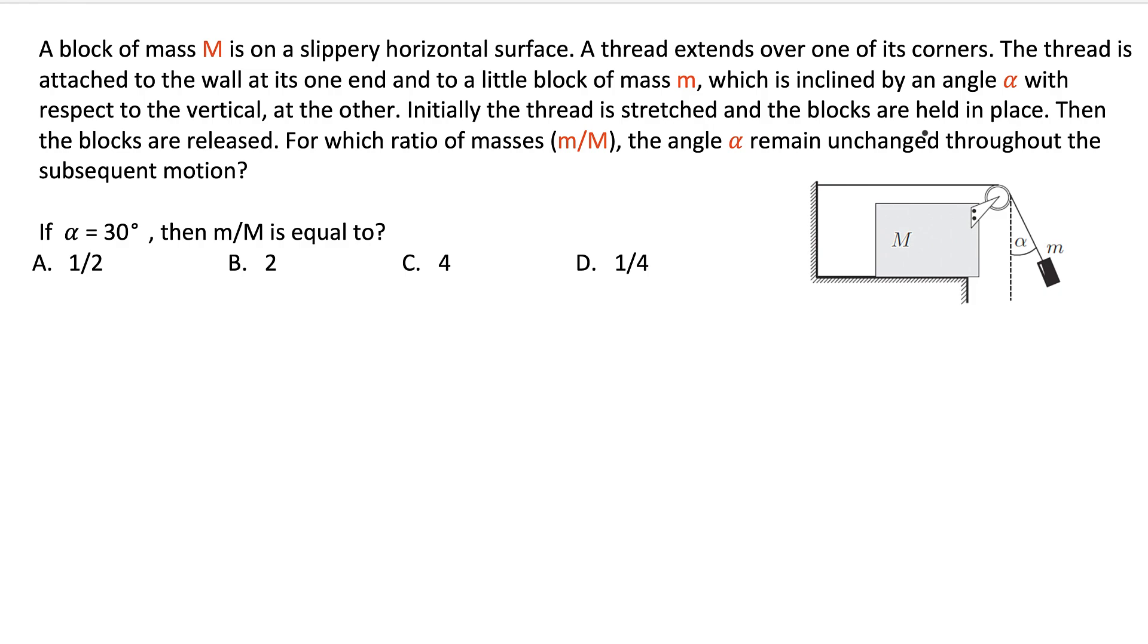A block of mass M is on a slippery horizontal ground. So this thing is frictionless. We can assume this is frictionless. Slippery means frictionless.